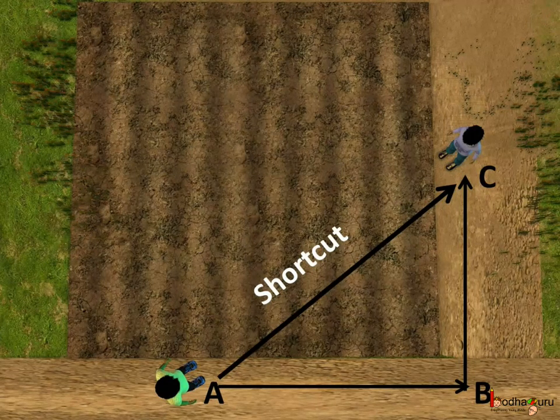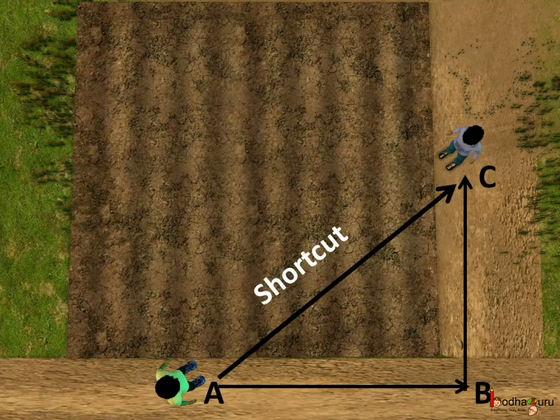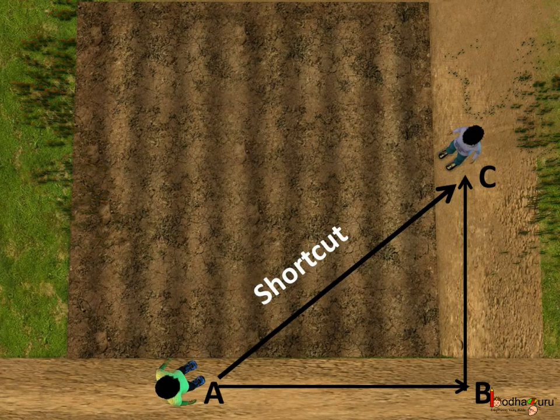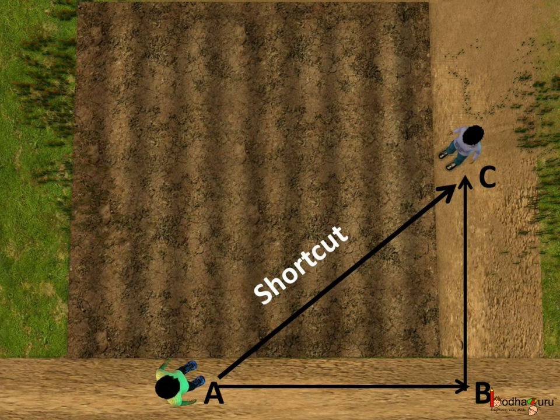Look, if Aman decides to go by the road starting from point A, he would have to go to point B first and then he would take a left to reach point C and meet Anand. But we know the path through the fields is the shorter one.